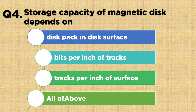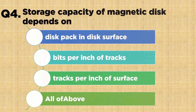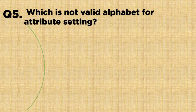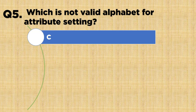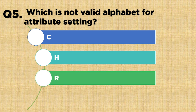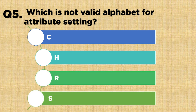Question number five: which is not a valid alphabet for attribute setting? Option A: C, Option B: H, Option C: R, Option D: S. The correct answer is Option A: C.